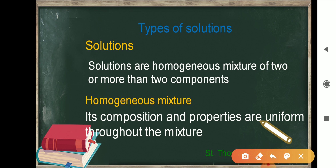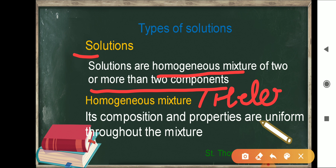First of all, let us come to know what is a solution. Solutions are homogeneous mixtures of two or more than two components. Mixtures are also divided into two parts: homogeneous and heterogeneous. Homogeneous mixture means its composition and properties are uniform throughout the mixture — whichever compounds you are taking, their composition and their properties should be uniform.